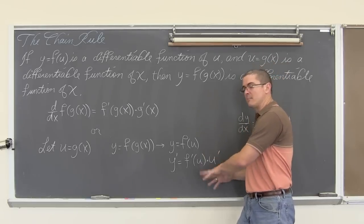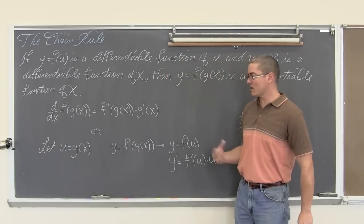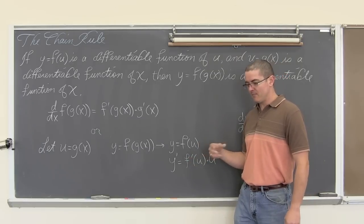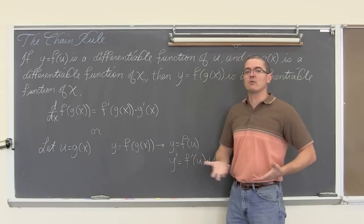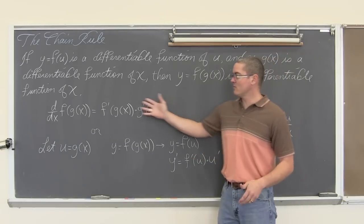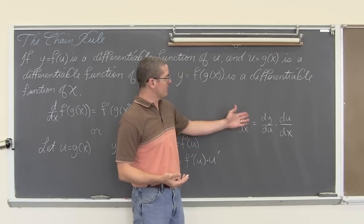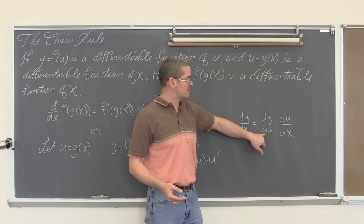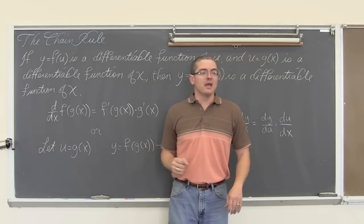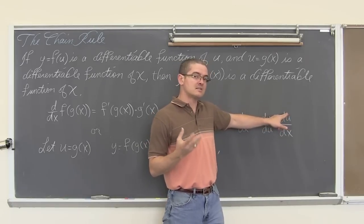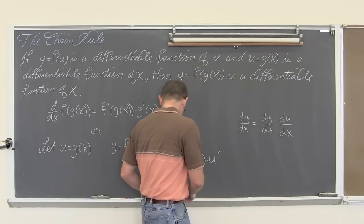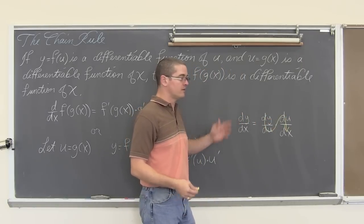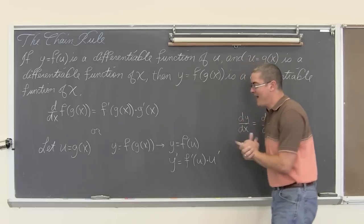You will have to go back when you are done and plug back in that original more complicated expression that you substituted out. But maybe this process will help you finish the problem more accurately and easier. I am probably going to be doing most of my examples in this format though. What we are doing is finding the derivative of y with respect to x, walking through that middle function — finding the derivative of y with respect to u, that inside function — and then multiplying by the derivative of u with respect to x, going through this chain until we get the derivative of y, the derivative of the original function with respect to x.